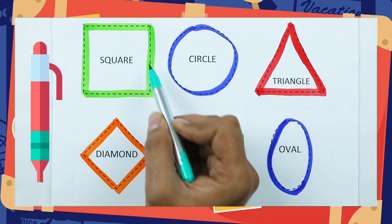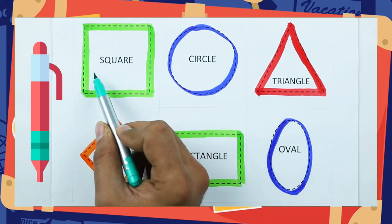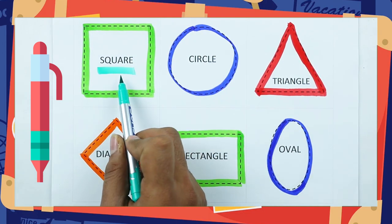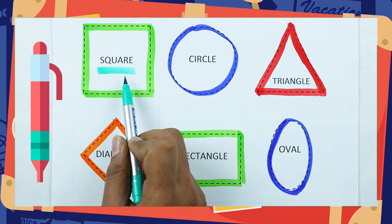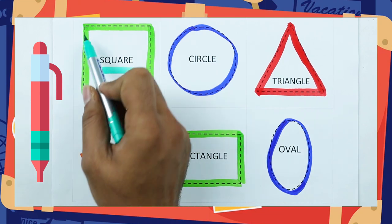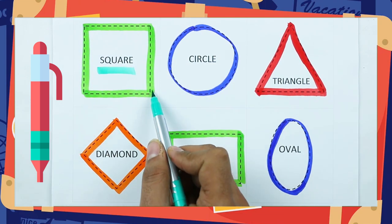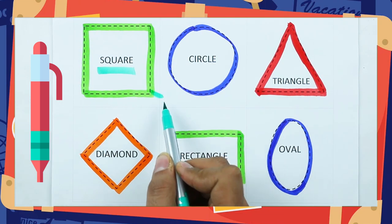Which shape is this? Tell me — square. S-Q-U-A-R-E. It's a square, with green color.